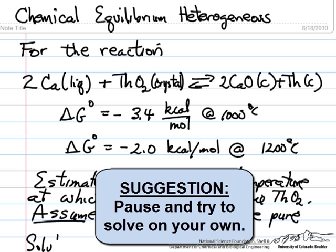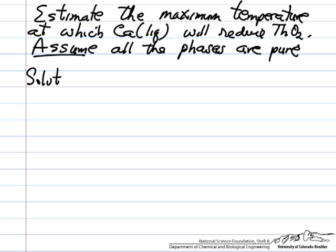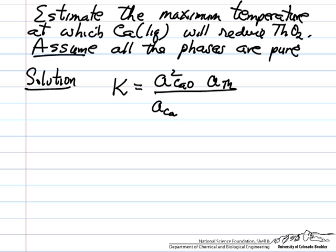So we are going to apply chemical equilibrium where equilibrium constant is the ratio of activities: calcium oxide squared, activity of thorium solid, activity of calcium squared, and then the activity of thorium oxide.